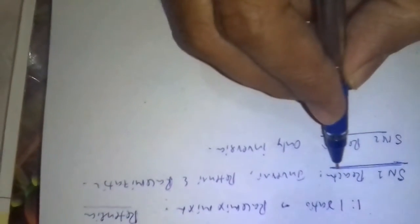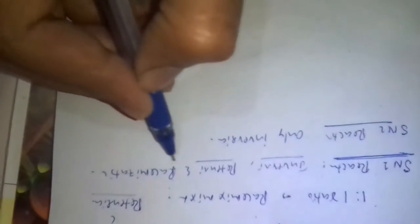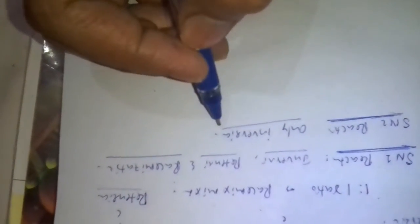These are the stereochemical results of SN1 and SN2 mechanisms. SN1 mechanism stereochemistry result is inversion, retention, racemization. SN2 reaction stereochemical result is only inversion takes place.